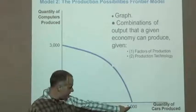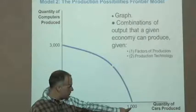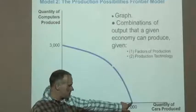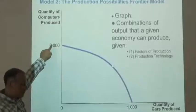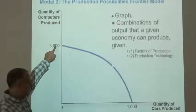What it says here is that if the economy devoted all of its resources to producing cars, it could produce 1,000, but no more. If it devoted all of its resources to producing computers, it could produce 3,000, but no more.